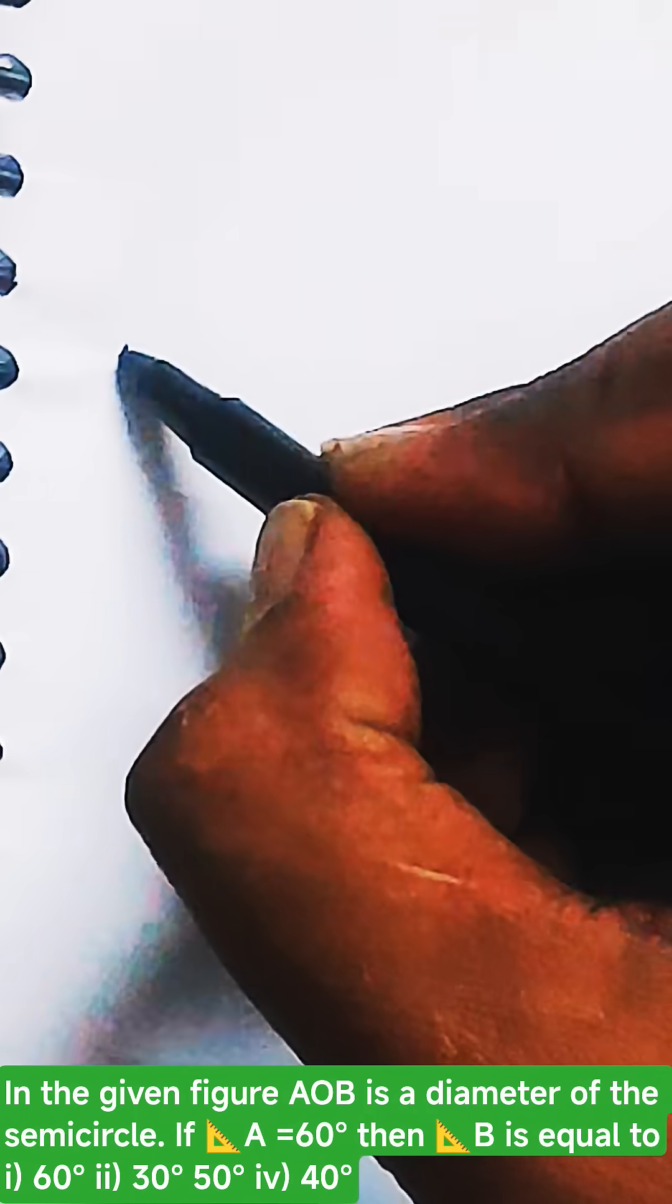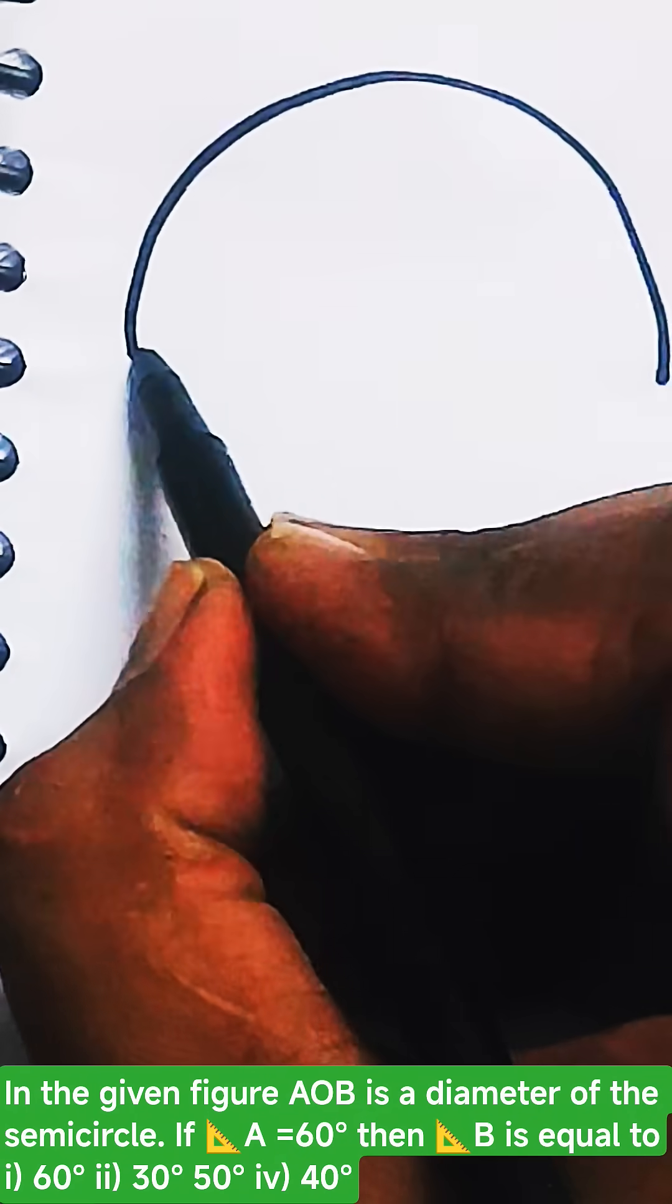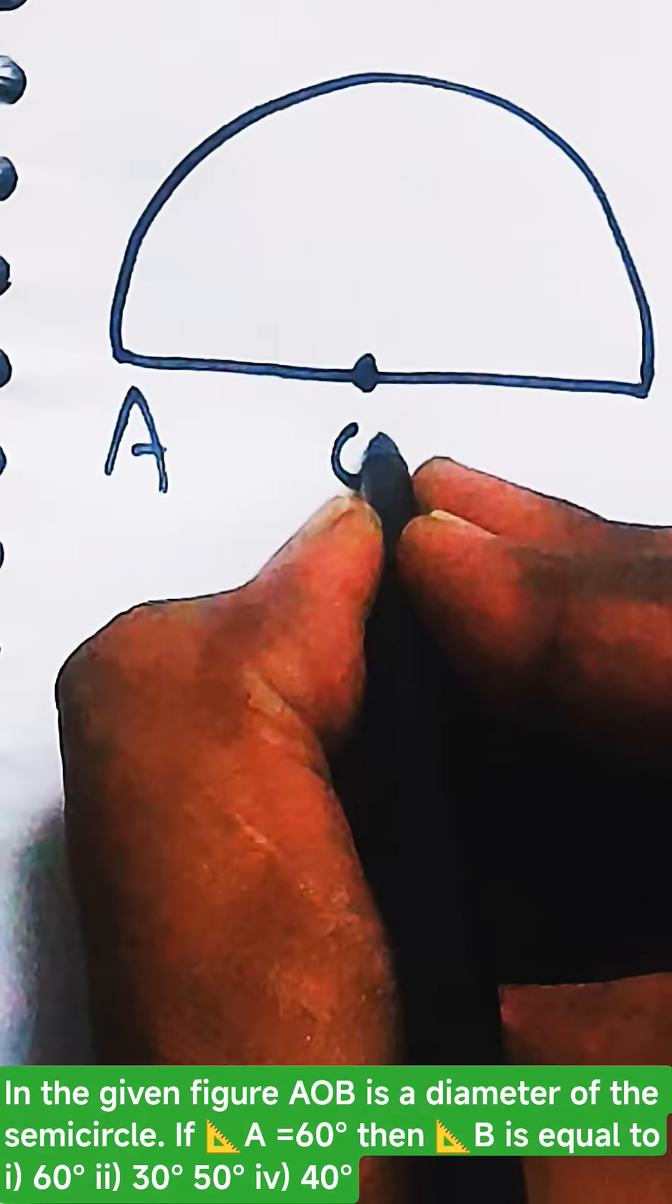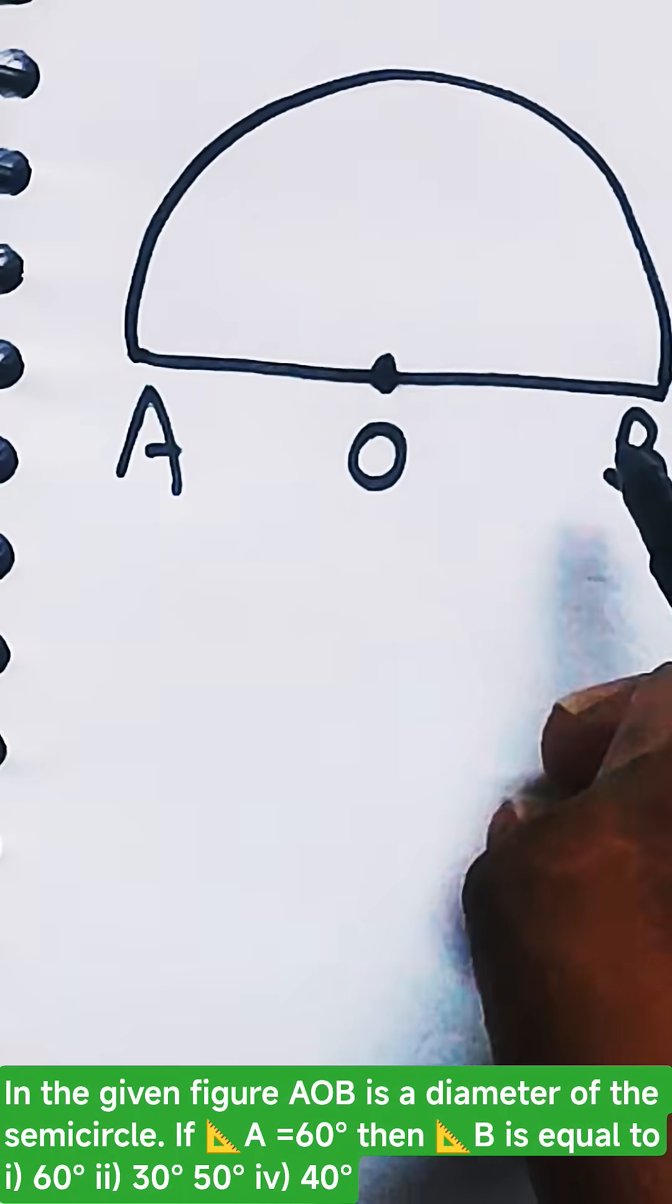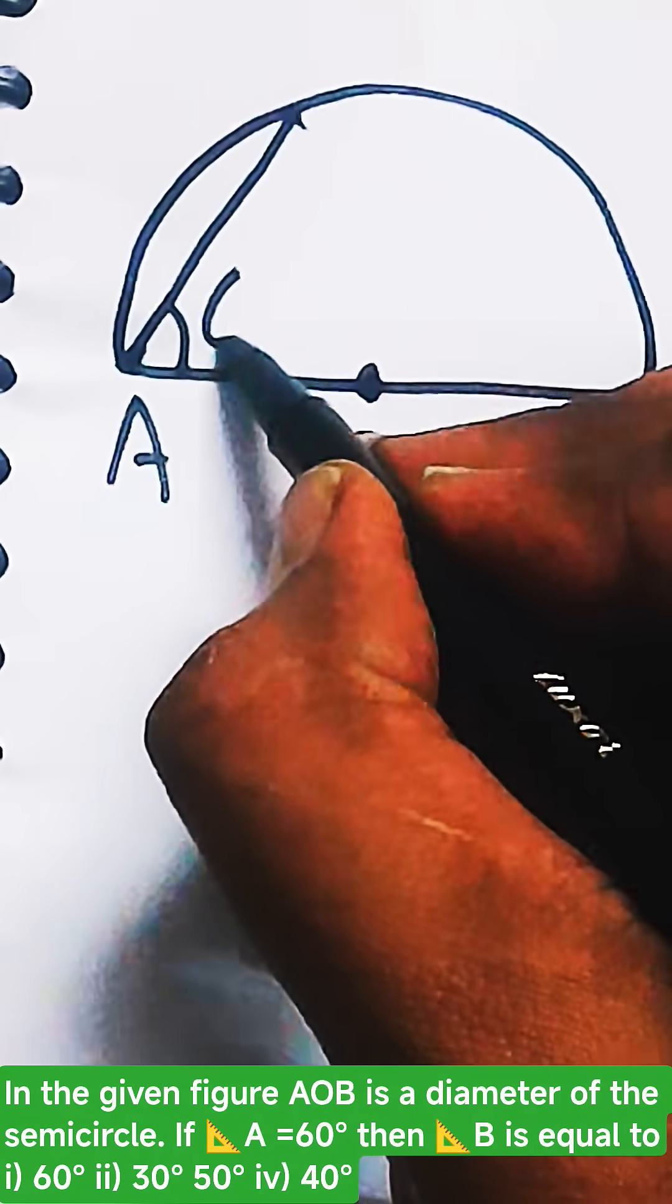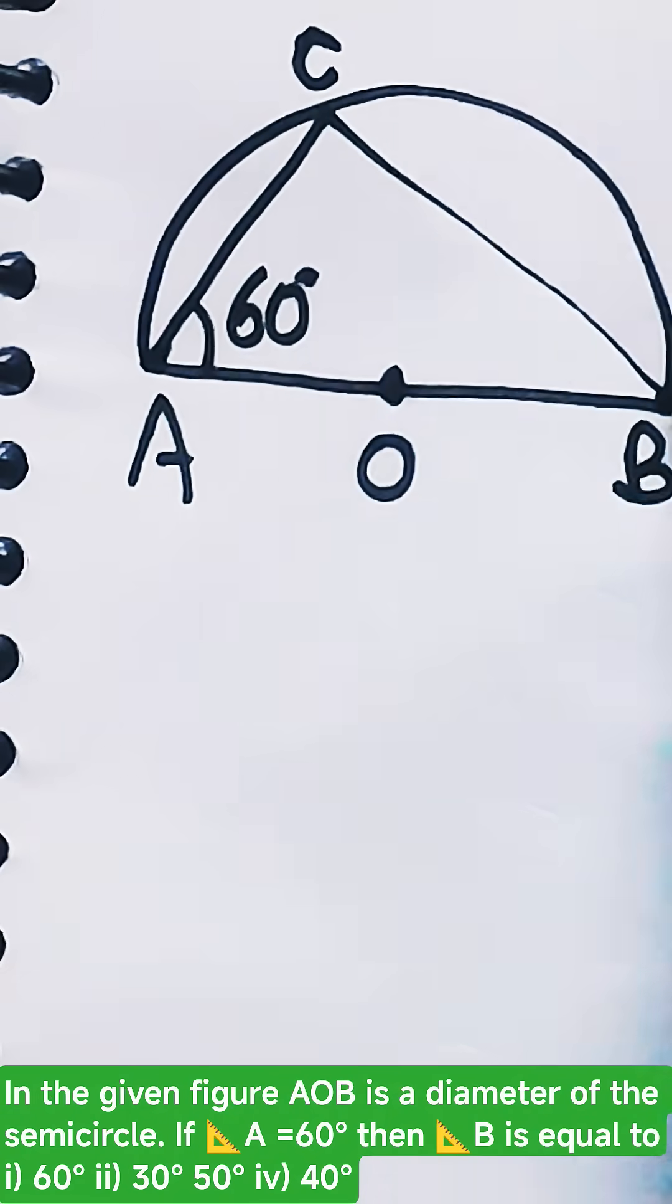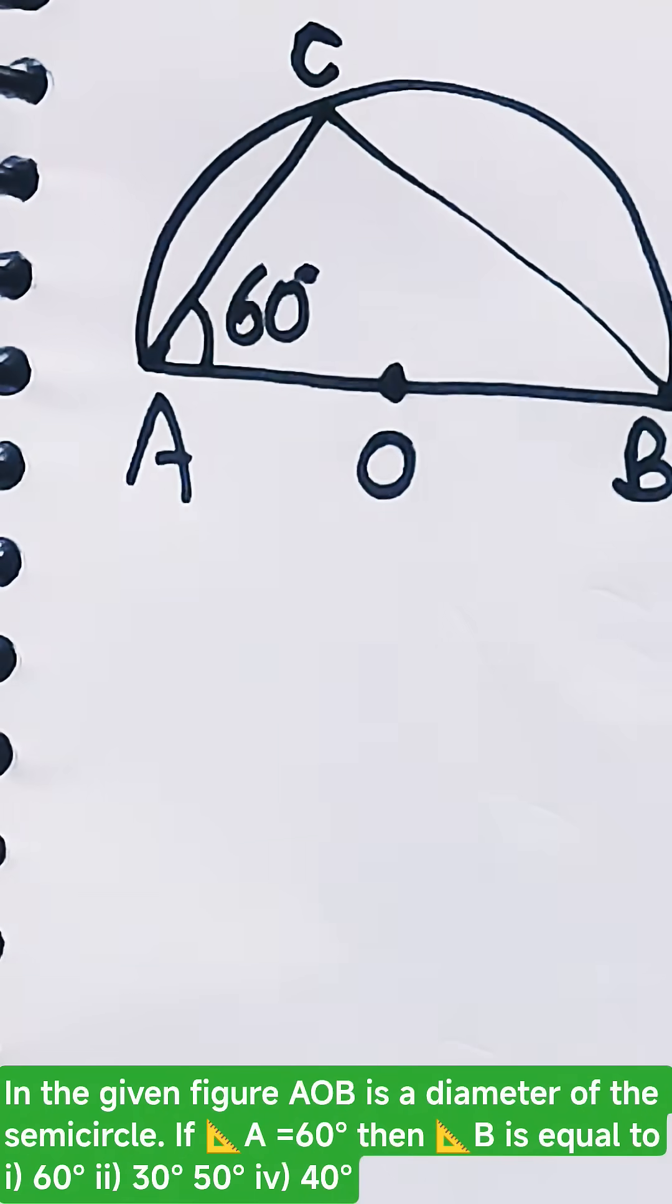A semicircle is given to you, this is the semicircle and this is the diameter. If AOB is the diameter and angle A is 60 degrees, and let's say C, so ABC is the triangle which is formed in the semicircle. If angle A is 60 degrees, then the measure of angle B, this we need to calculate.